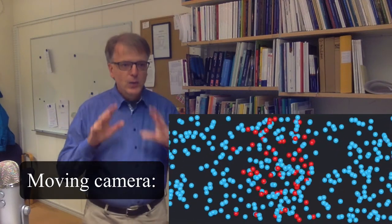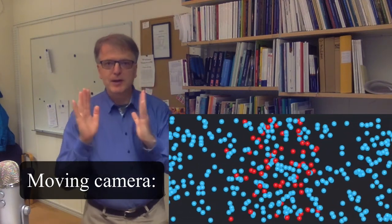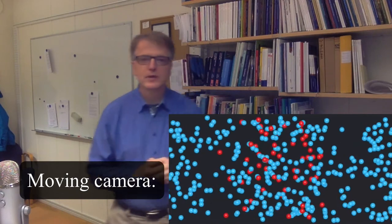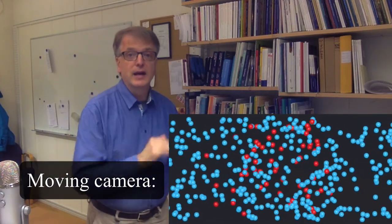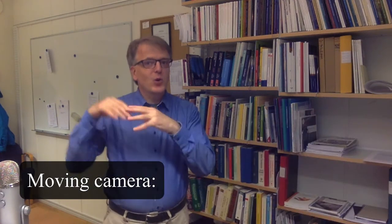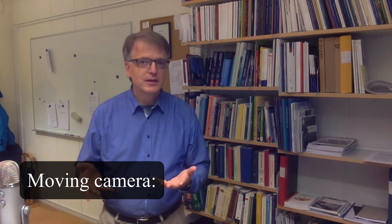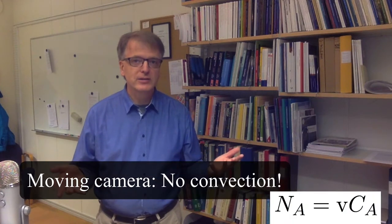So how can we deal with this? Well, if we let the camera move with the flow, so our coordinate system moves with the same rate as the average velocity of the flow, then according to that coordinate system, we do not have a convection anymore.